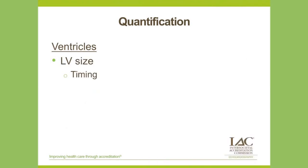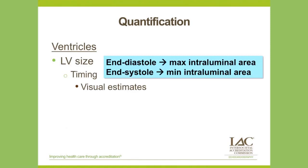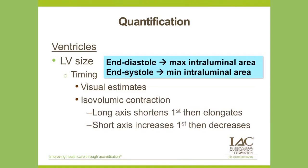The left ventricle has been the most studied segment with many challenges and controversies. One challenge involves the exact timing of measurements. In most pediatric echo labs, end-diastole is defined as the point of maximal intraluminal area and end-systole as the moment of minimal intraluminal area, but these designations rely on visual estimates. During isovolumic contraction, the left ventricular long axis first shortens then elongates, whereas the short axis first increases then decreases, making it difficult to identify the timing of maximal and minimal intraluminal area in apical four-chamber views.